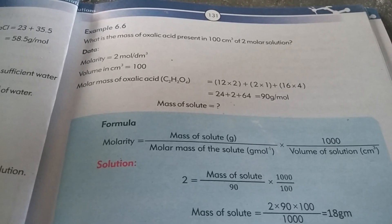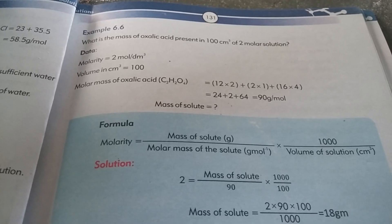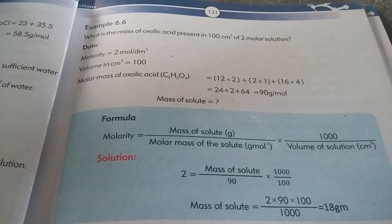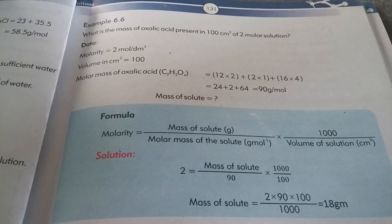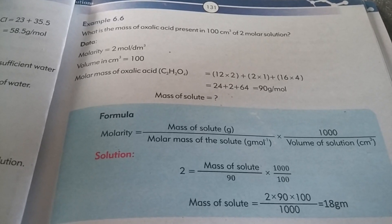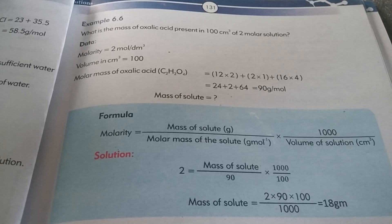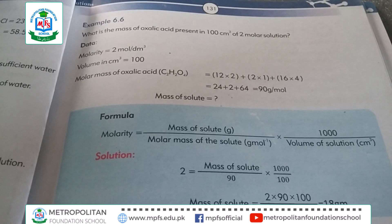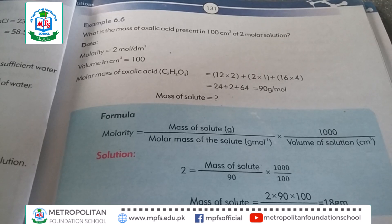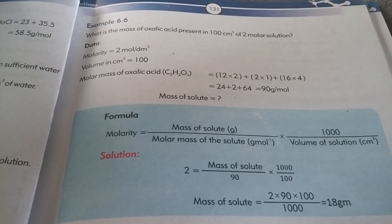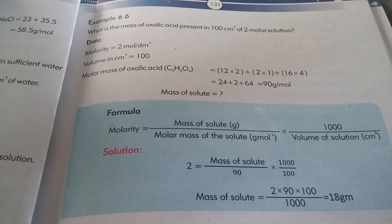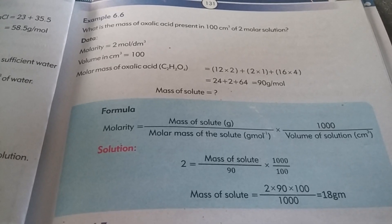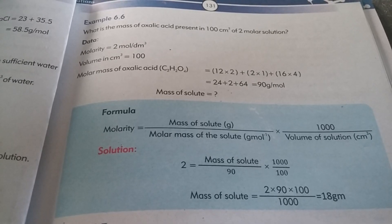Now we can find the mass of oxalic acid. Before solving this numerical, first we find the molar mass of oxalic acid. The formula of oxalic acid is C₂H₂O₄. We need to know the atomic masses of all three elements: carbon, hydrogen, and oxygen. The atomic mass of carbon is 12, hydrogen is 1, and oxygen is 16.